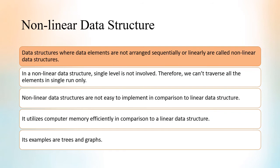Nonlinear data structures are those where data elements are not arranged sequentially or linearly. In a nonlinear data structure, a single level is not involved — there will be multiple levels, so we cannot access all the elements in a single run. Linear data structures are easier to implement than nonlinear ones, but nonlinear data structures utilize computer memory more efficiently. Some examples of nonlinear data structures are trees and graphs.